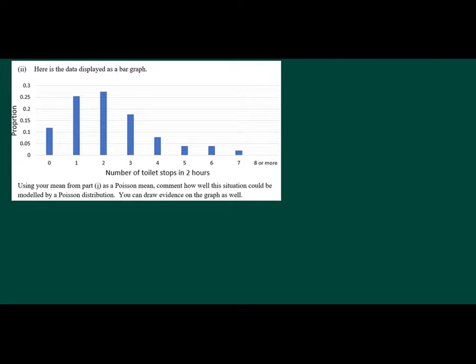So question part two, we've got the data here displayed as a bar graph from the previous table. So what it's saying is using your mean from the first part, okay, so we've calculated the mean or the expected value, I'm going to use it as 2.2, but you could use 2.2156 or 2, depending on what you got for your previous answer. Comment on how well the situation can be modelled by a Poisson distribution. So there's a clue, we're doing Poisson, and you can draw evidence on the graph as well.